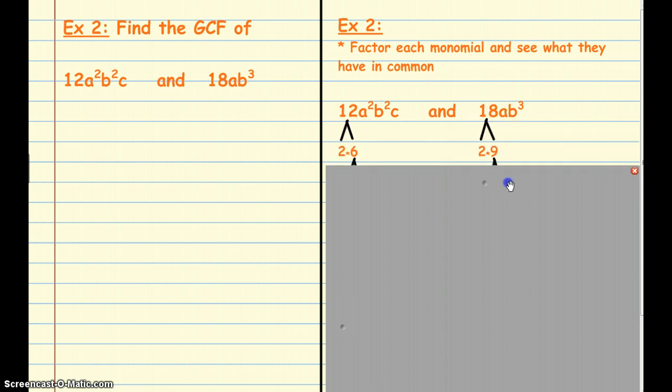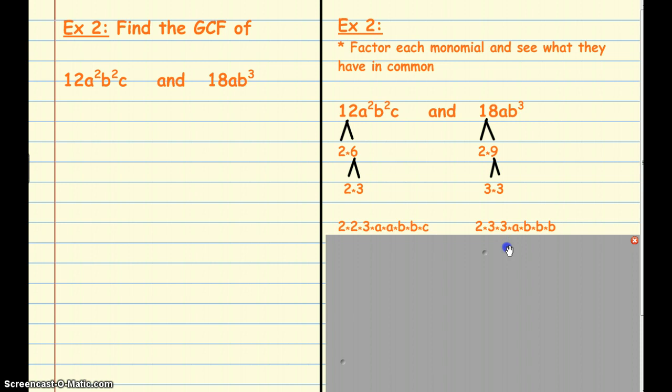12, you could either think 3 and 4 or 2 and 6. 18, you could either have done 6 and 3, or in this case we're choosing to do 2 and 9. In this case 2 is prime for both of them, but 6 and 9 are not, so we're going to break them down further. 6 can be broken down as 2 times 3, and 9 can be broken down as 3 times 3. Then I break up the a² as a times a, b² as b times b, and then we have our c. And then I bring my a down, and then b³ has b times b times b.